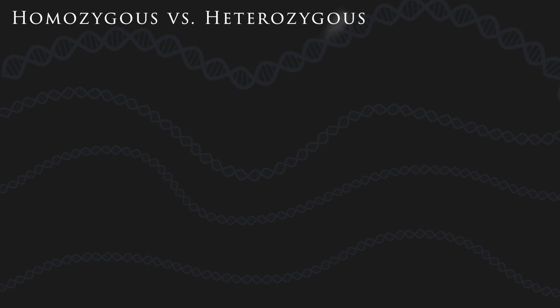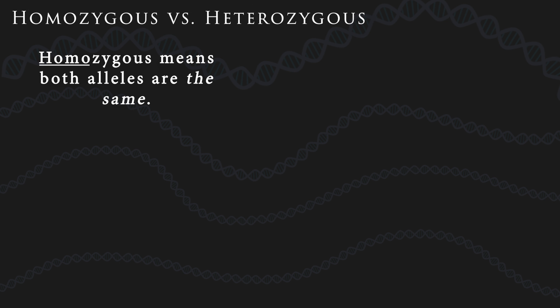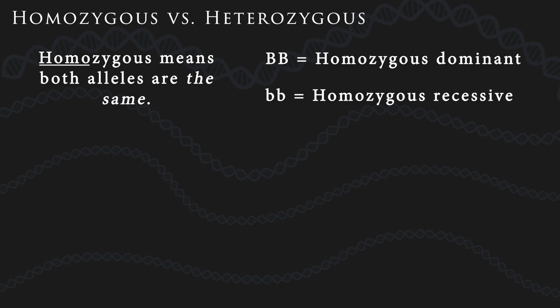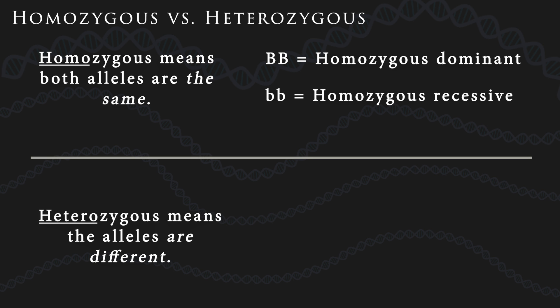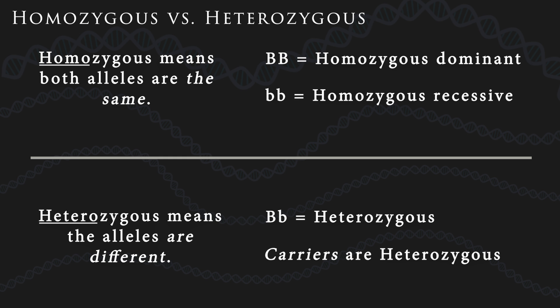Genotypes can be either homozygous or heterozygous. Homozygous means both alleles are the same. Big B, big B is homozygous dominant. Little b, little b is homozygous recessive. Notice that in both cases, the alleles are the same. Heterozygous means the alleles are different — big B, little b. A heterozygous individual carries a recessive allele but doesn't show that trait, because the dominant allele takes over. These individuals are sometimes called carriers. They don't express the recessive trait, but they can pass it on to their children.